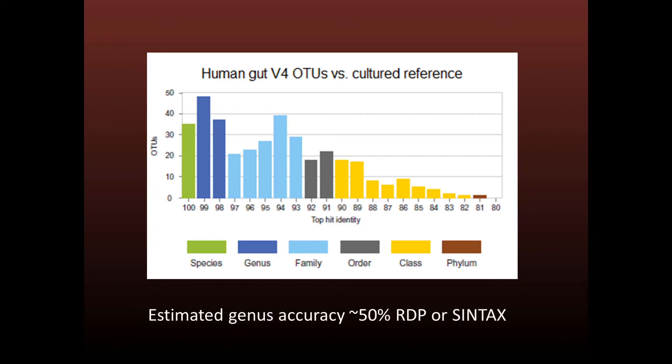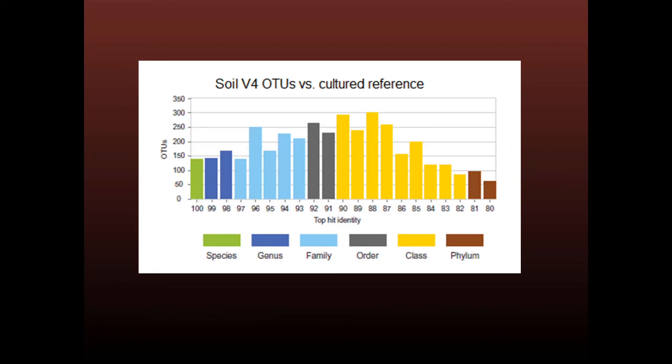Using this identity distribution, we can estimate that the overall genus accuracy on this dataset would be around 50% if we use the RDP classifier or SINTAX. Here is the top hit identity distribution for a set of V4 OTUs made from soil samples. Soil is a highly diverse environment containing many unnamed groups and we therefore see fewer high identity OTUs. On this dataset, the average accuracy of genus predictions would probably be worse.